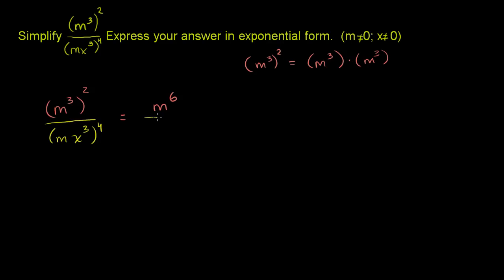And then the denominator here, we have mx to the third to the fourth power. Now, in general, when you have the product of some numbers, and you're raising the entire product to some exponent, you can raise each of the terms to that exponent. So this denominator right here, this is going to be m to the fourth times x to the third to the fourth. I'm just raising both of these terms, m to the fourth, x to the third to the fourth power.